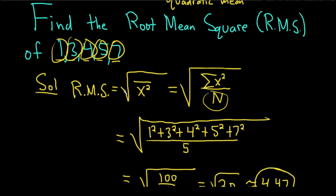Easy way to memorize it: you square them, add them up, divide by the total, and then take the square root.